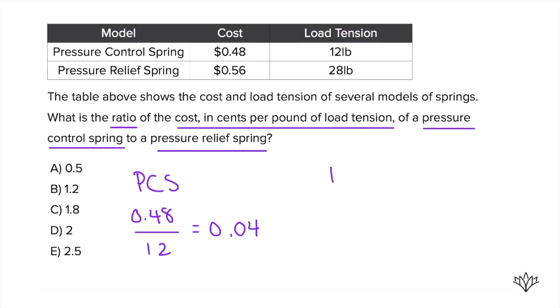Now let's do it for the pressure relief spring. For this one, 56 cents is the cost and 28 pounds is the load tension. So 56 cents over 28 gives us 0.02, two cents.